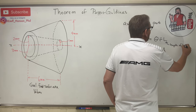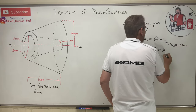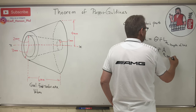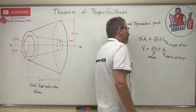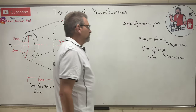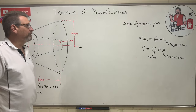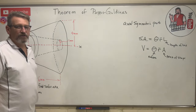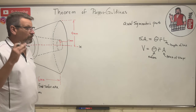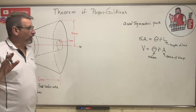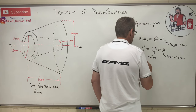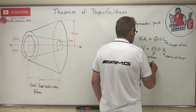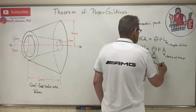L is the length of a line, and A is the area of a shape. To do a Pappus-Guldinus problem, step one — and I always tell my students this first — draw the generating shape.